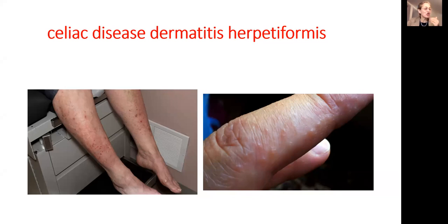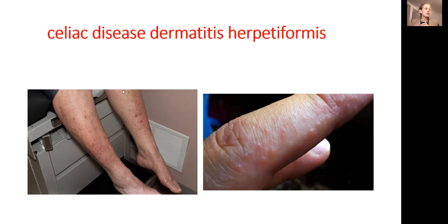Patients with celiac disease often have digestive complaints, but not always. They can also have a skin presentation called dermatitis herpetiformis. Sometimes patients present in practice without digestive complaints — only with the skin condition. It can be mistaken for eczema or psoriasis. The skin presentation can appear on the legs, knees, elbows, and lower back, but the classic textbook presentation is on the hands.